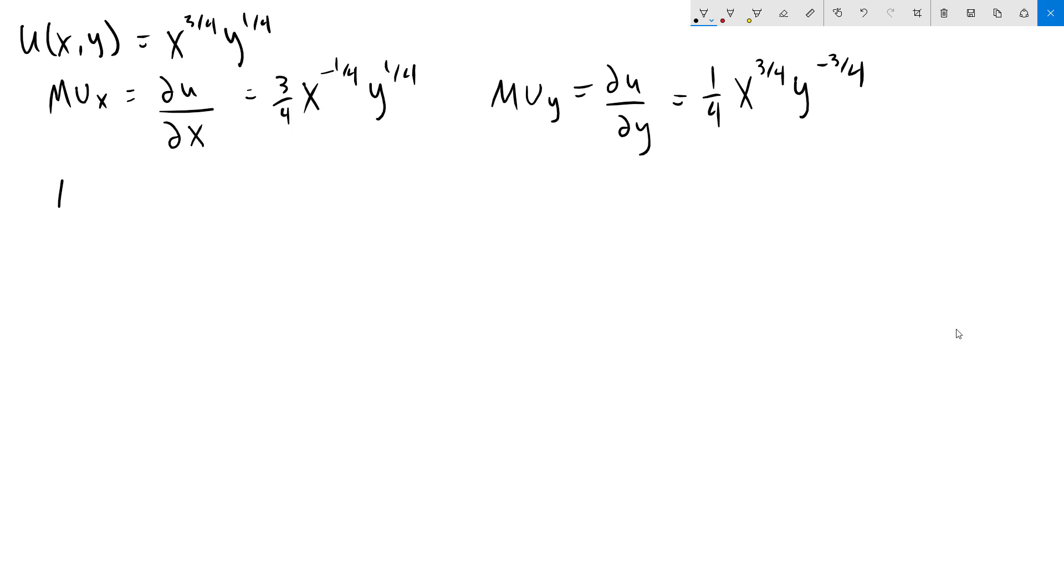Next, we are going to write out our marginal rate of substitution of x for y. You could also do the marginal rate of substitution of y for x, as long as you stay consistent later on. To do this, we take the marginal utility of x divided by the marginal utility of y.